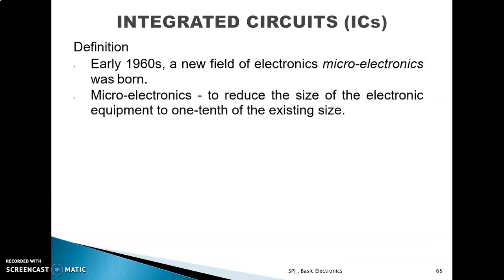In 1960, a new field of electronics started, called microelectronics. Microelectronics means to reduce the size of electronic equipment to one tenth of the existing size. That was the aim of microelectronics. If the component size is one tenth of the electronics branch, that is the microelectronics branch.